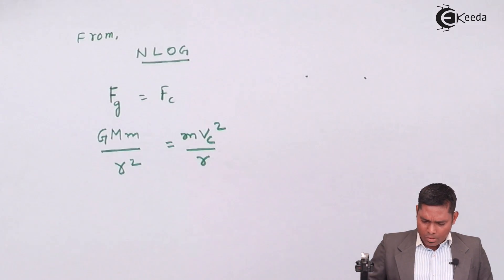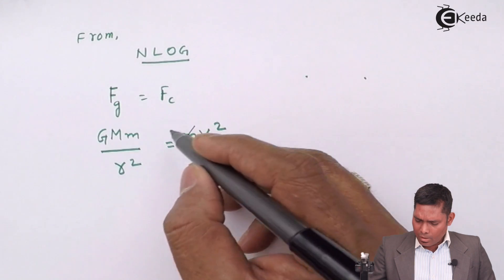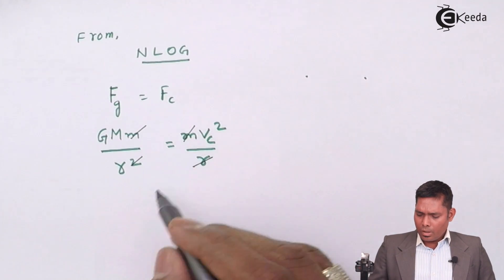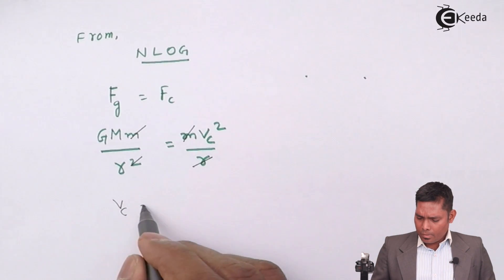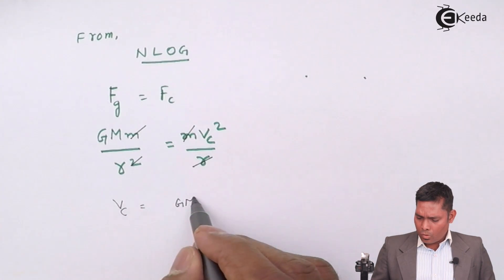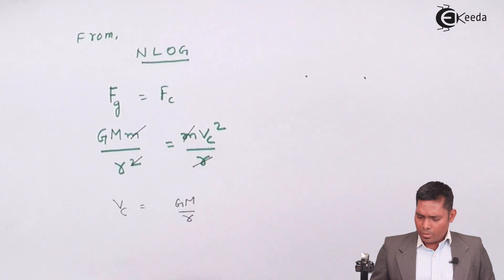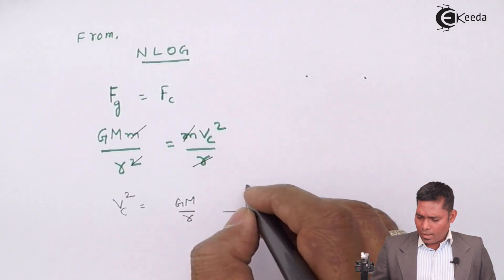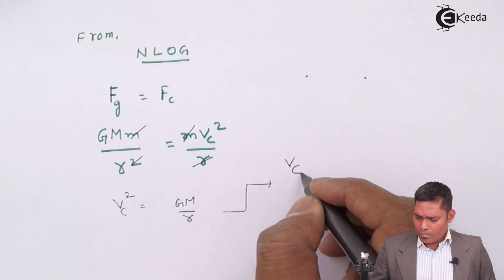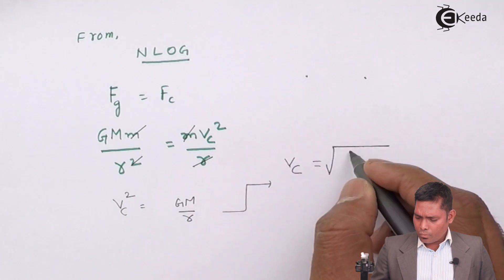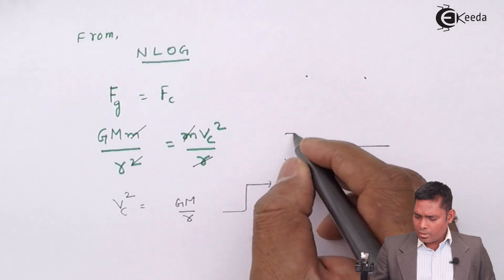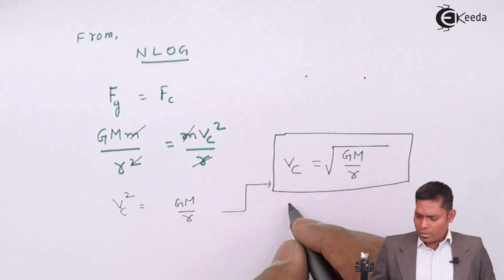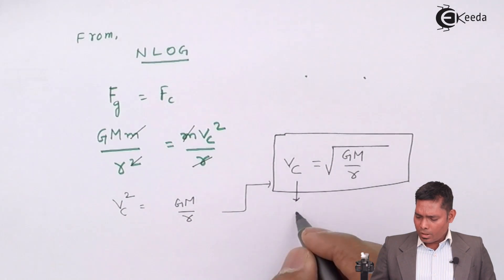The centripetal force is provided by the gravitational force. According to Newton's law of gravitation, the gravitational force is G·M·m divided by r squared. This equals the centripetal force m·Vc² divided by r. Small m cancels out, one r cancels, and Vc² equals GM over r. Therefore, Vc equals the square root of GM over r.